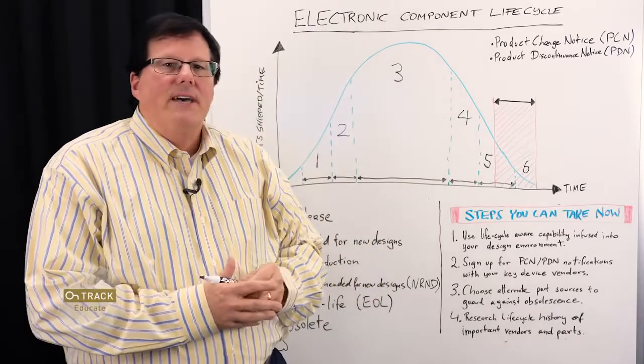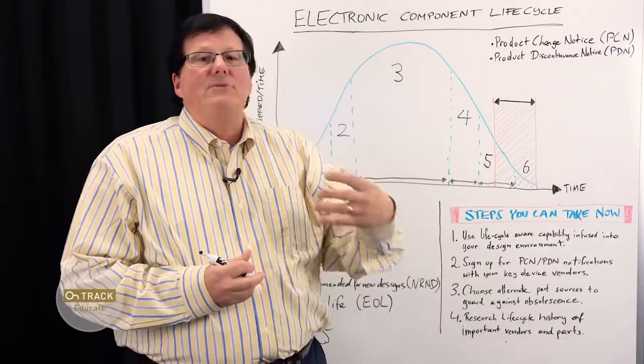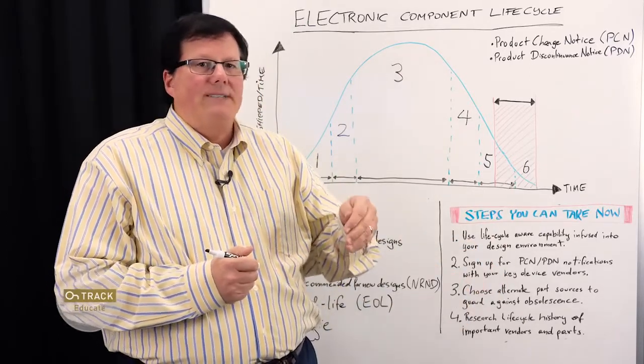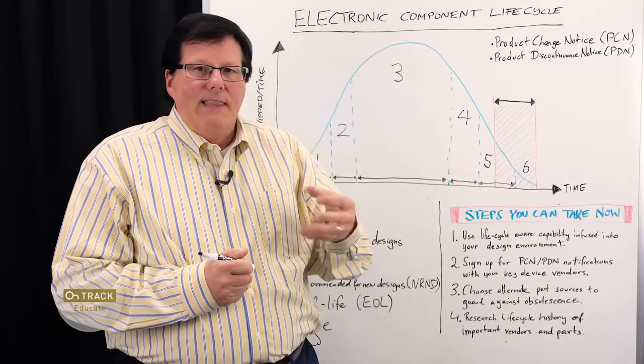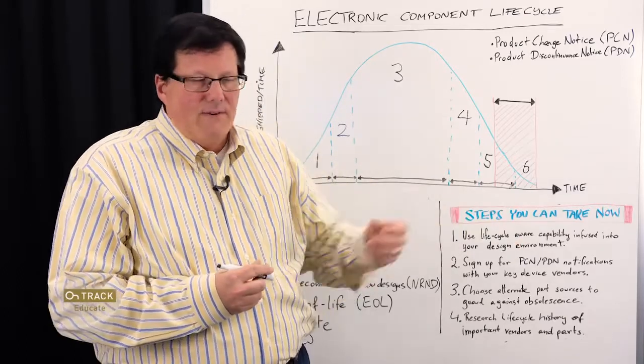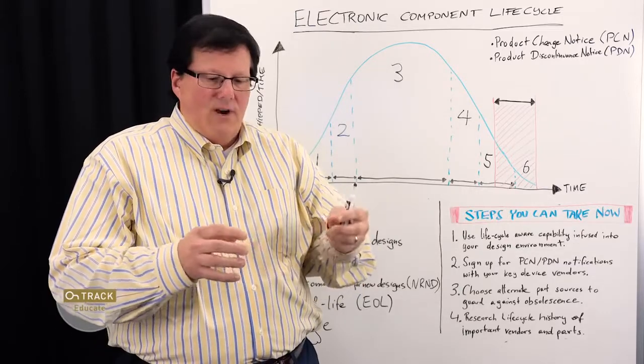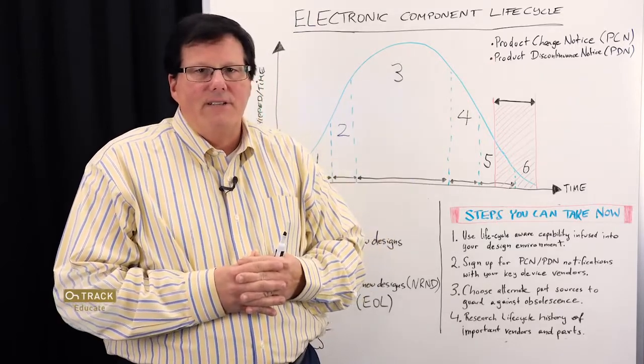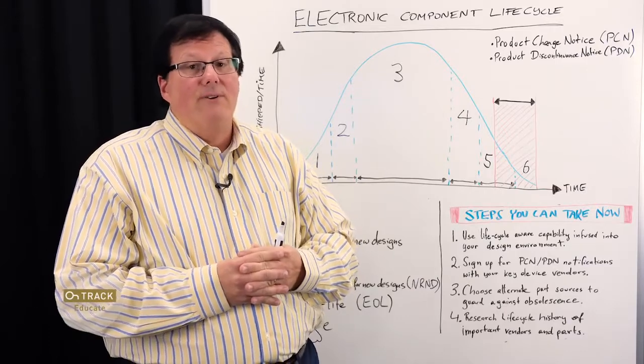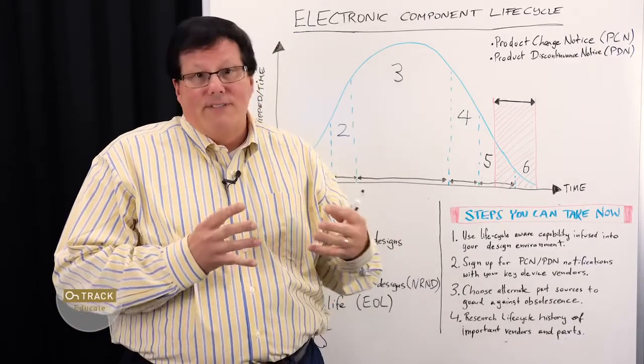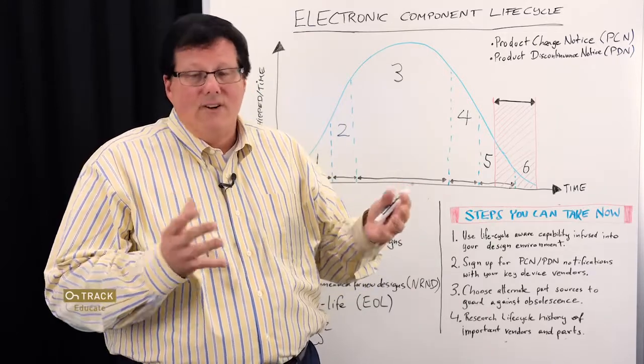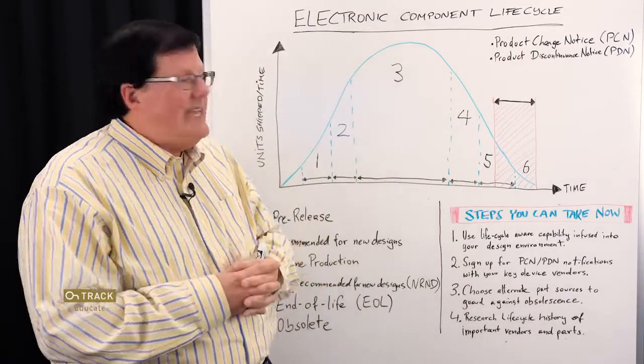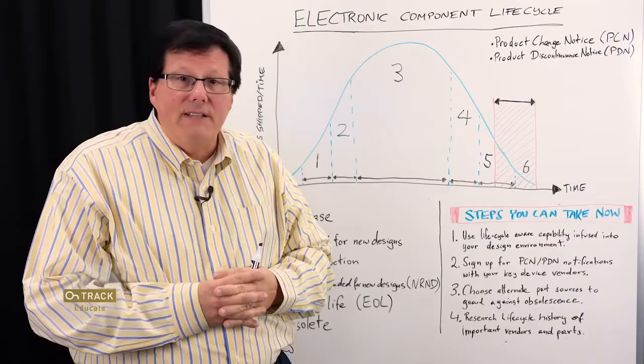Now product change notice can be as something as simple as hey the product used to be made here now it's being made at this location or fab. It can be something like well it was a lead process, a leaded process, now we're moving to a lead free process. I've seen cases where the type of the plastic used in the molding changed that initiated a product change notice. A product change notice can also include a reference to a product discontinuance notice that is talking end of life. But product change notices are important to keep track of particularly with silicon devices.